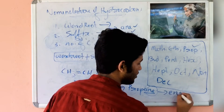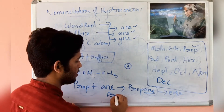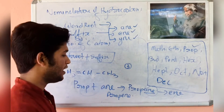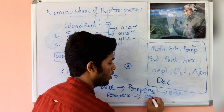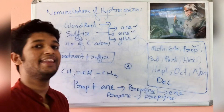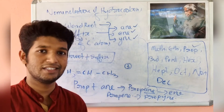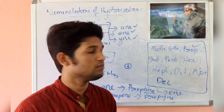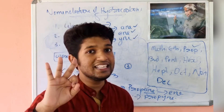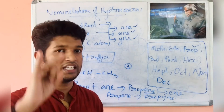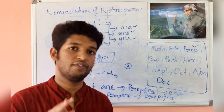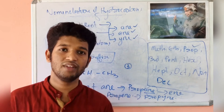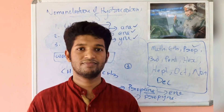If it is a triple bond, it will change into 'propyne'. So this is the simple way to name an organic compound without a branch. We need to know three things: word root, suffix, and the number of carbon atoms. If you know these three things, you can easily name an organic compound without a branch. I hope you enjoyed the class — thank you!